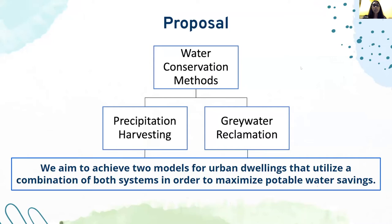Our proposed and researched methods of water conservation are precipitation harvesting and graywater reclamation. We will be modeling both systems in two different dwellings to better understand how to maximize potable water savings in an urban environment.